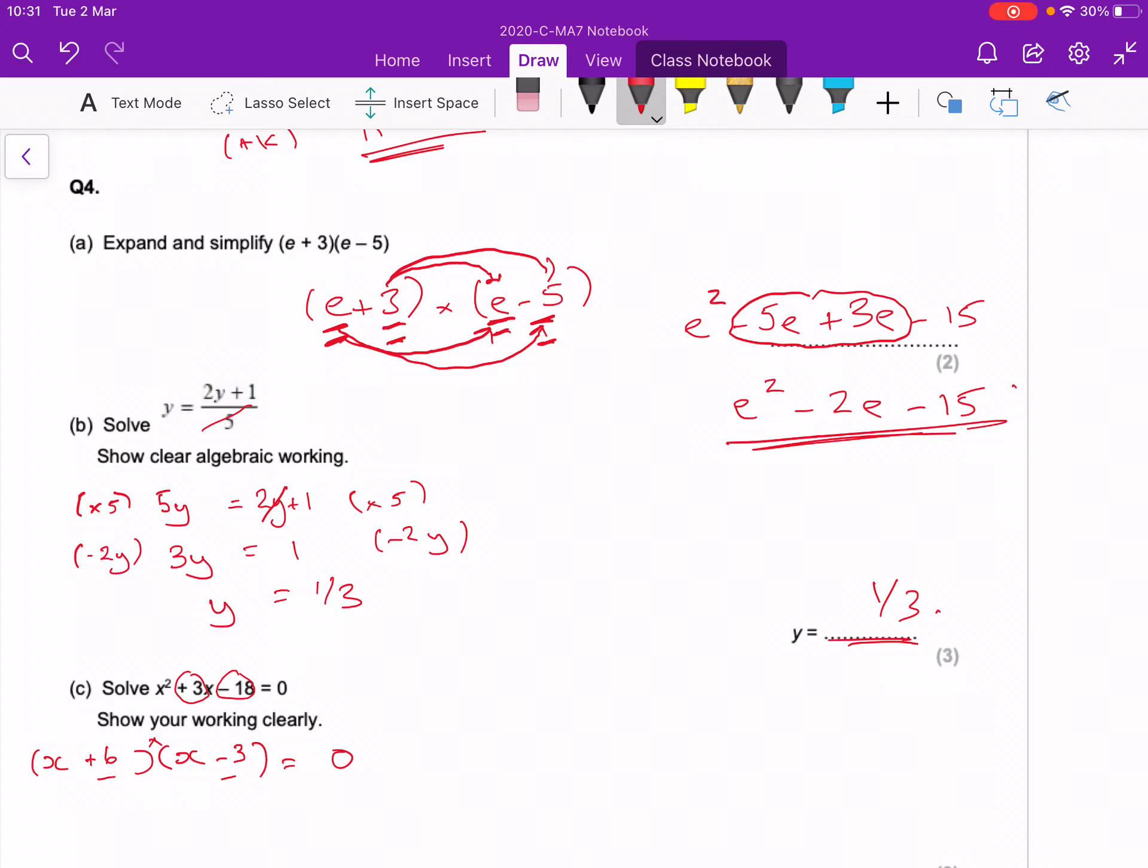Now these two brackets are multiplying each other, so if you've got an answer with a zero, then either x + 6, that first bracket, would have to be equal to zero, meaning that x equals minus six, or the second bracket, x - 3, has to be equal to zero, means that x has to be equal to three. So two answers: x equals minus six and x equals three.